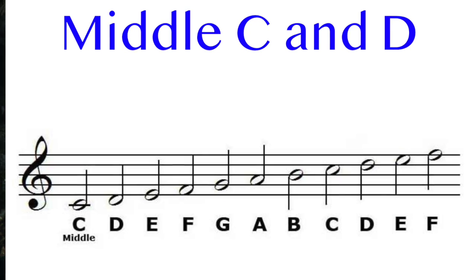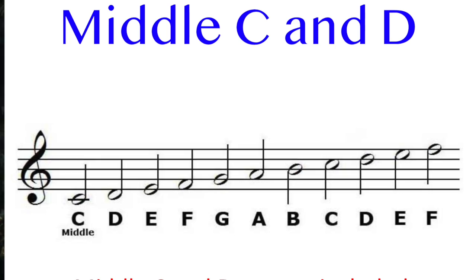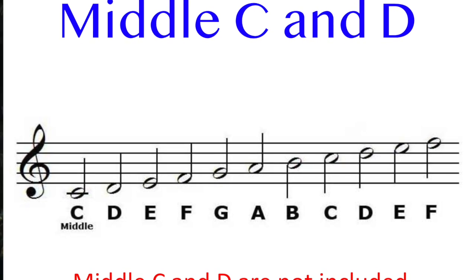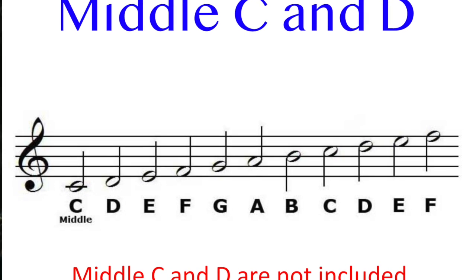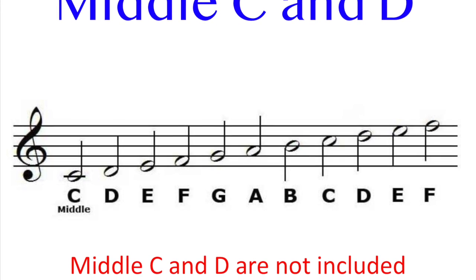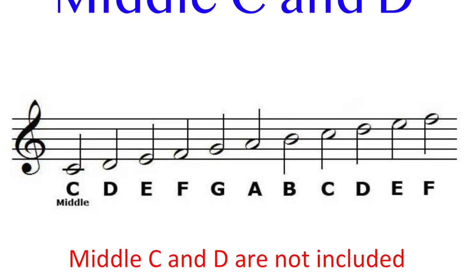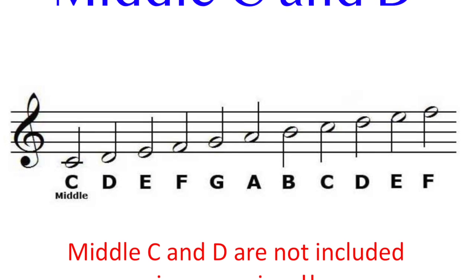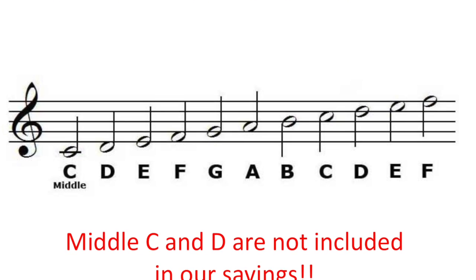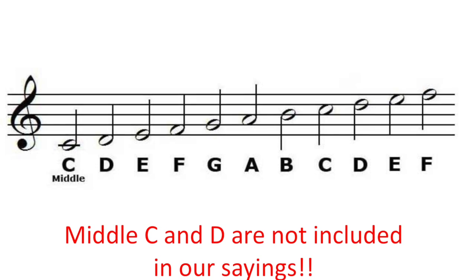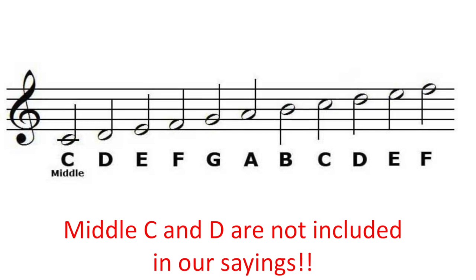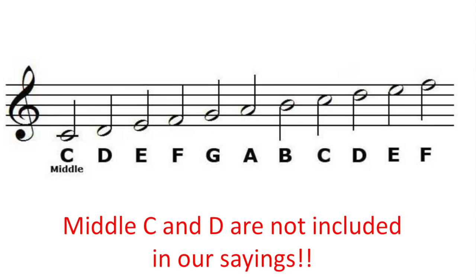Here is a picture of middle C through a high F. Middle C and D were not in our sayings, so you just have to remember those. D is sometimes considered the bottom space, and some people say 'D-FACE' to help remember it. The musical alphabet just goes C D E F G A B, then starts over.